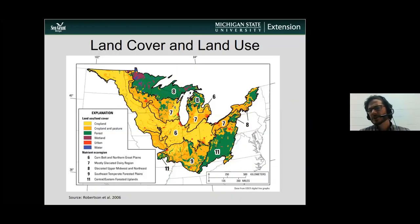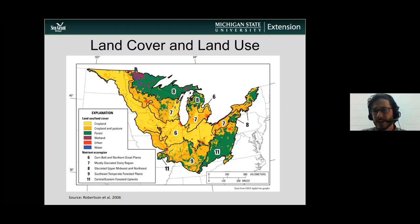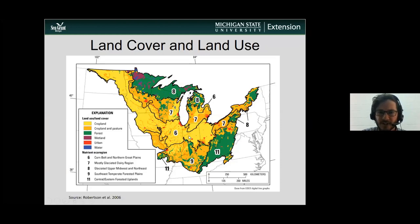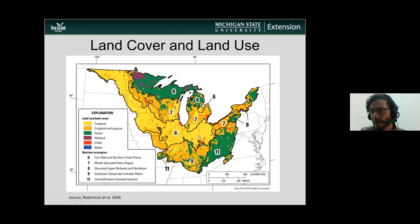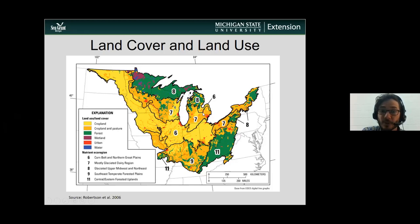When we talk about water quality in watersheds, we often start by thinking about land cover and land use. Land cover describes the predominant vegetation within a landscape, and land use is the predominant use we make of the land. For example, the yellow areas represent row crops — corn, soybean, wheat. Orange represents cropland and pasture, green is forest, red is urban, and we also have some large wetland complexes.